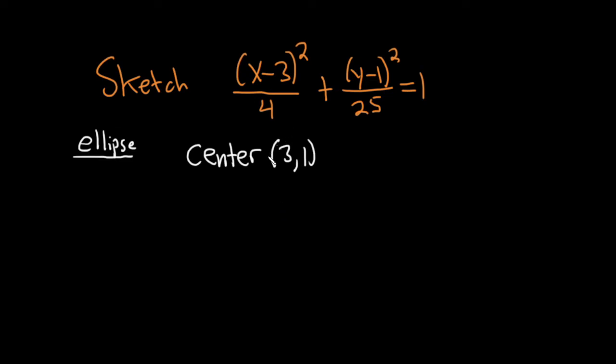And then we need to find a. So in an ellipse, this is really important, a is the square root of the bigger number. So the bigger number here is 25. So in an ellipse, a is always the square root of the bigger number. That's so key. And so in this case, it's 5.